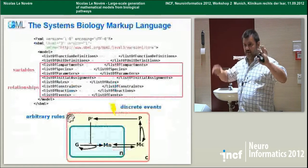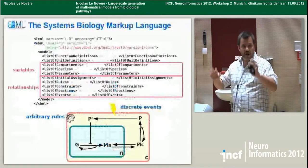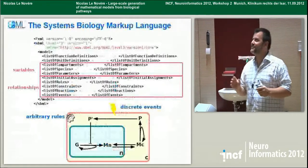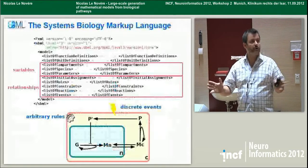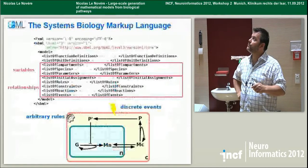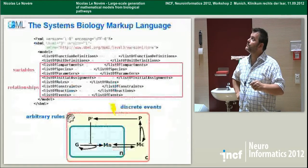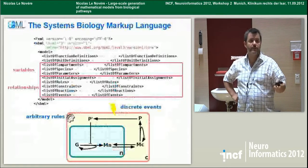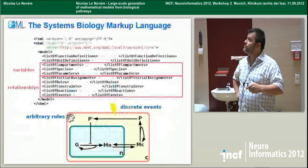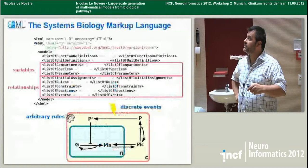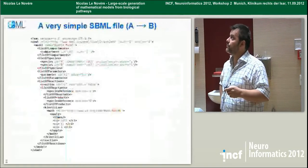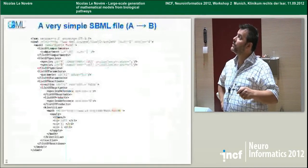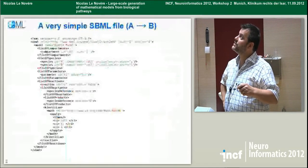A bit about SBML — some people in the room might say 'oh no, SBML again,' but that will be just a few slides. SBML, the Systems Biology Markup Language, is simply an XML language to encode models so you can exchange them. You basically define your variables: the compartments, the molecular species you put in there, the parameters, and all the relationships between those variables. You can represent compartments as containers, pools that react within containers and between containers. You can also put discrete events, arbitrary rules, and so on.